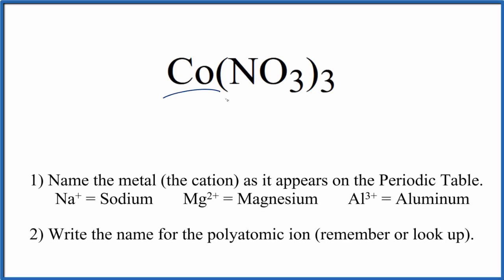To write the name for Co(NO3)3, we first need to recognize that Co is cobalt, a transition metal, and NO3 is the nitrate ion. So we have this transition metal and this polyatomic ion, a group of nonmetals.